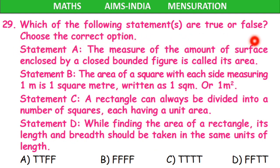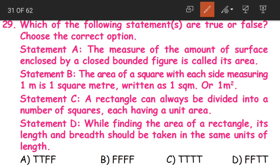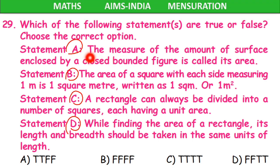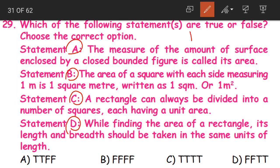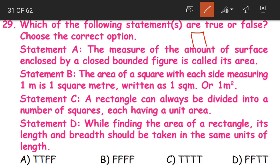Next question: which of the following statements are true or false? We have statements 1, 2, 3 and 4. Coming to statement A: the measure of the amount of surface enclosed by a closed bounded figure is called as area. Closed bounded figures include square, rectangle, triangle. The amount of surface inside is called as area. We use the formula for area to calculate the amount of surface. So statement A is true.